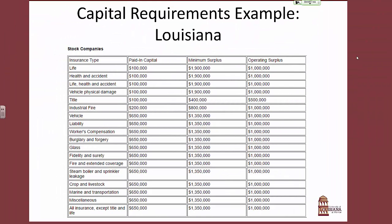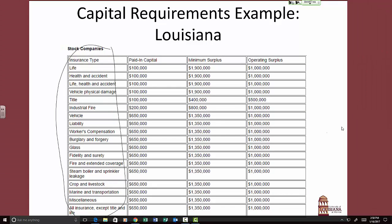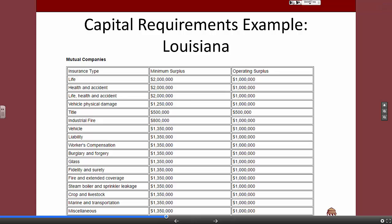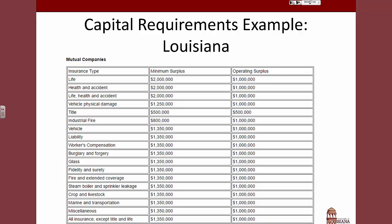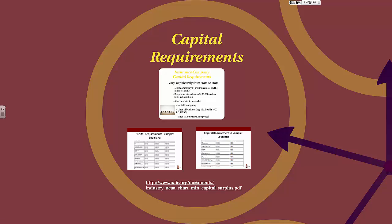Let's look at an example of Louisiana's capital requirements. Notice the different lines of business and that in terms of paid-in capital there are only three different capital requirements. In terms of minimum surplus requirements — assets minus liabilities — these vary and are higher than paid-in capital requirements. Operating surplus is a bit lower and is the same across all lines of business with the exception of title insurance. There are also different requirements for mutual companies: no paid-in capital requirements, but minimum surplus requirements very similar to those for stock companies. The NAIC on their website provides a list of all minimum capital and surplus requirements.